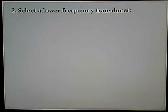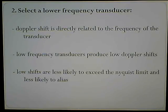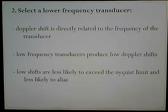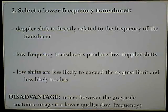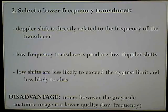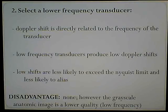Number two: select a lower frequency transducer. Lower frequency transducers are less likely to aliase because the Doppler shift is directly related to transducer frequency. Low frequency transducers produce low Doppler shifts, which are less likely to exceed the Nyquist limit and therefore less likely to aliase. The disadvantage is that the grayscale anatomic image is lower quality with a low frequency transducer; however, with modern technology that is less of a concern, though you are giving up a little image quality.